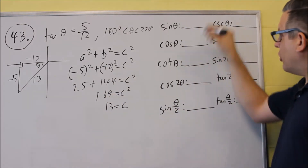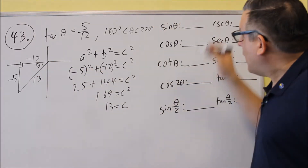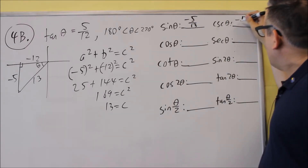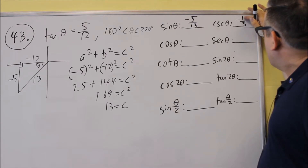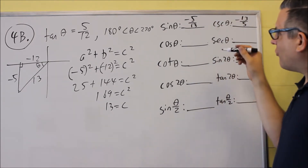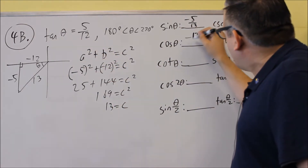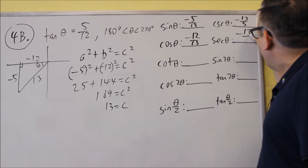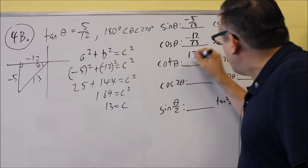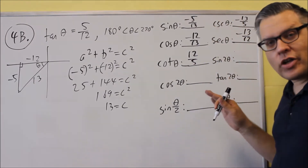Now we have the triangle complete, we're ready to fill in the first five. For sine, that's opposite over hypotenuse — that would be negative 5 thirteenths. And then the cosecant would be negative 13 over 5. This one doesn't have any radicals to deal with, which makes the problem a lot easier. So we have negative 5 thirteenths, negative 13 fifths. Cosine is going to be adjacent over hypotenuse — negative 12 thirteenths. And your secant is negative 13 over 12. Your cotangent is going to be the reciprocal of the original one, 12 over 5. So we've filled out the first 5 — just regular fractions.